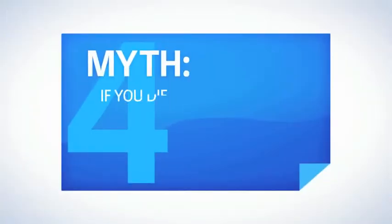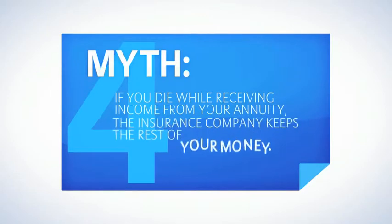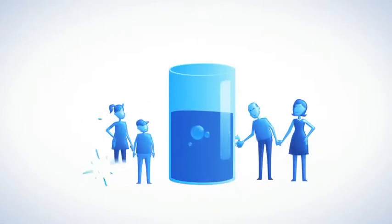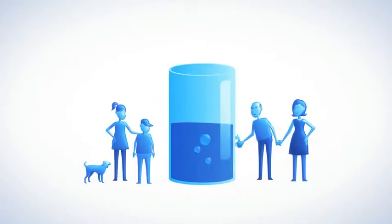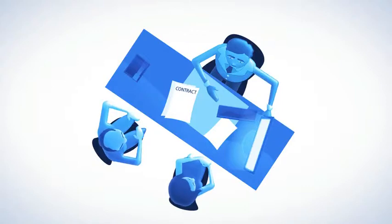Myth number four: if you die while receiving income from your annuity, the insurance company keeps the rest of your money. The truth is, today's annuities offer options that let your beneficiary receive any remaining value left in your contract. A financial professional can explain how this works in more detail and help you choose an option that's right for you.